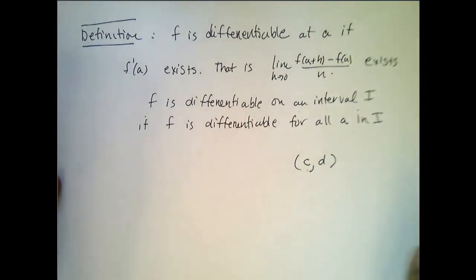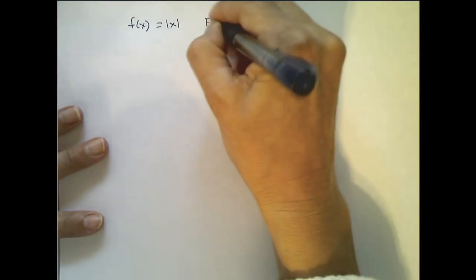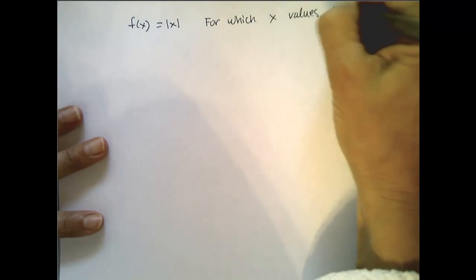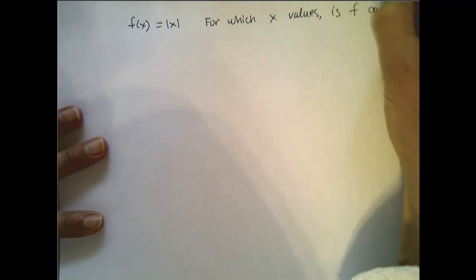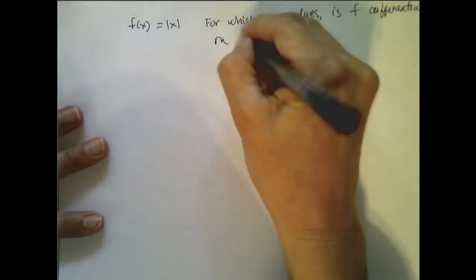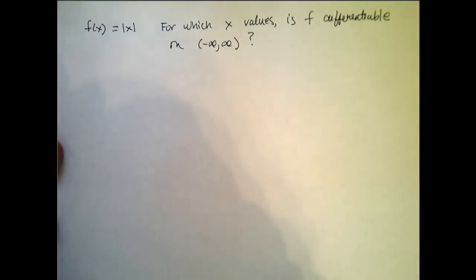A natural question that may be asked is: if I give you a particular function and ask you to tell me all the places for which that function is differentiable, you would need to be able to answer that question in terms of the limit. So let's look at this — f of x equals the absolute value of x. For which x values is f differentiable? The interval I'm going to choose is the set of all real numbers. Is f differentiable on the set of all real numbers?